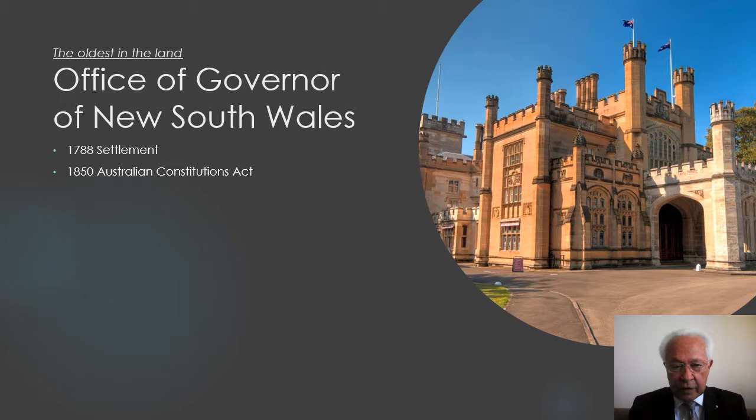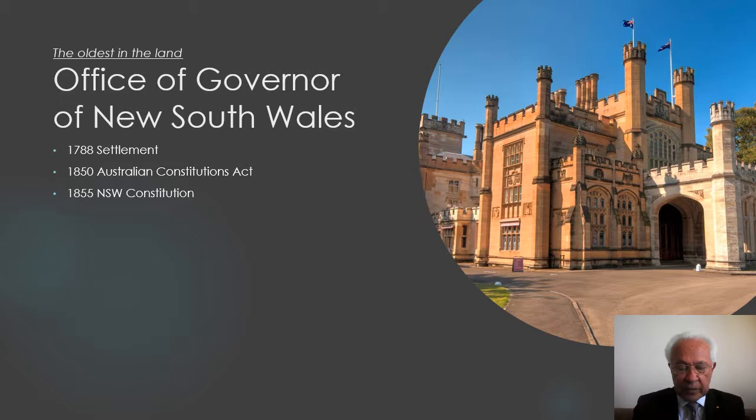By the 1850 Australian Constitutions Act, the colonies were invited to submit their own constitutions to London, which they did, and in 1855 New South Wales had its own constitution, with the Governor acting as the local constitutional monarch, exercising the powers of the Crown in relation to the local Westminster system.